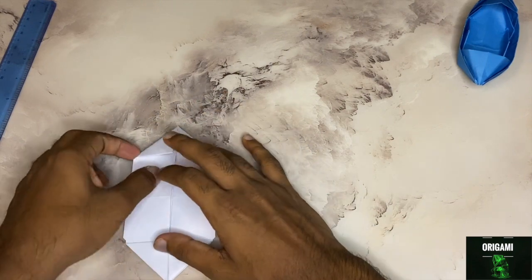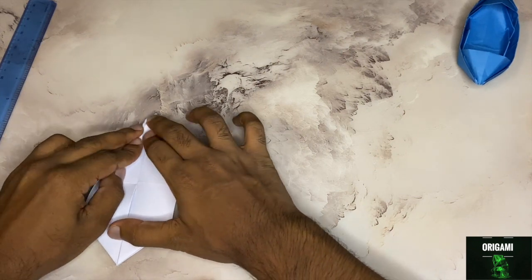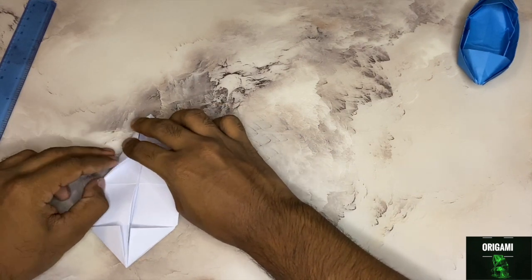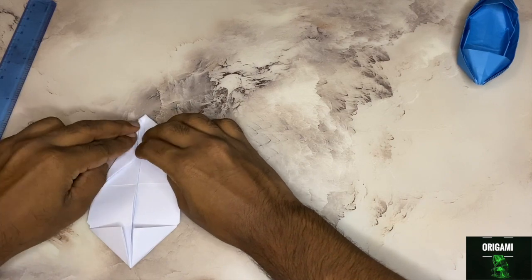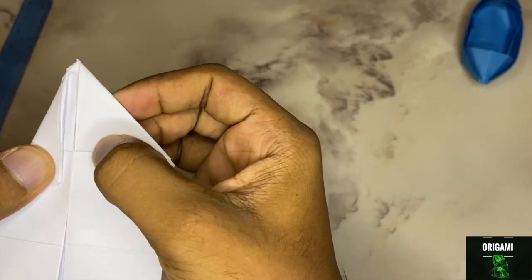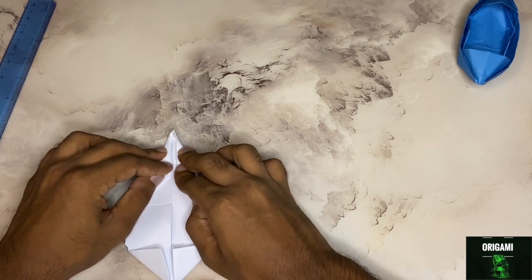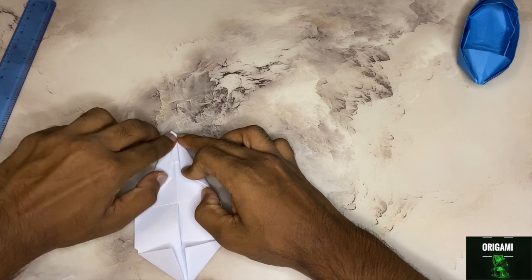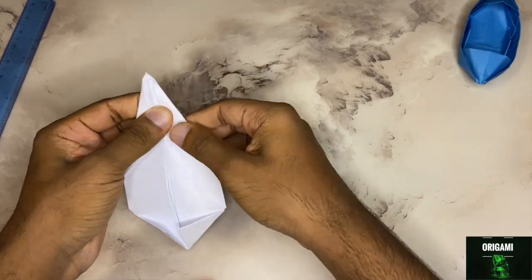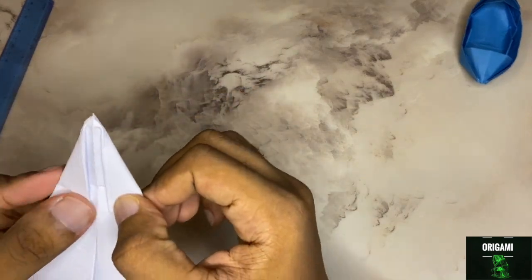So the next step is to once more bring this corner in towards center, keeping a little gap from the center line, just like that. Notice how there's a little space in the center line. So do the same for all four sides. The paper does get thick here, so make sure you're creasing it well. So it should look like this.